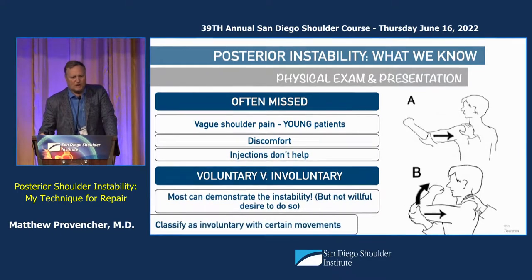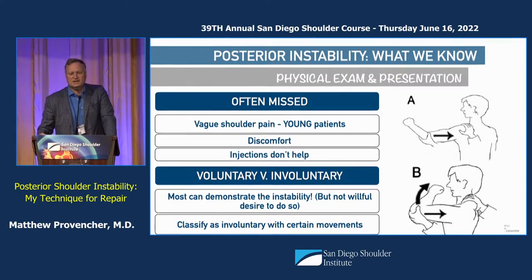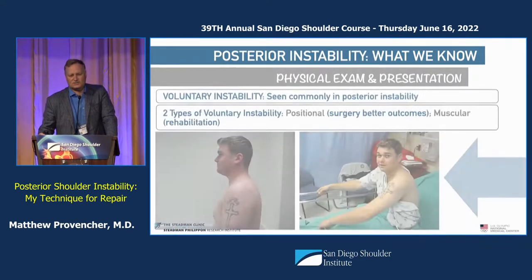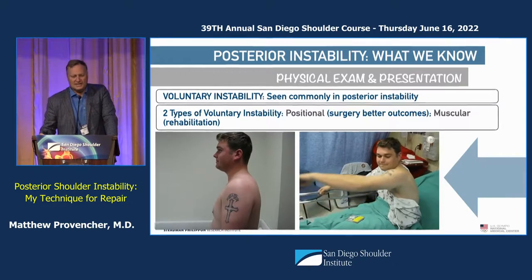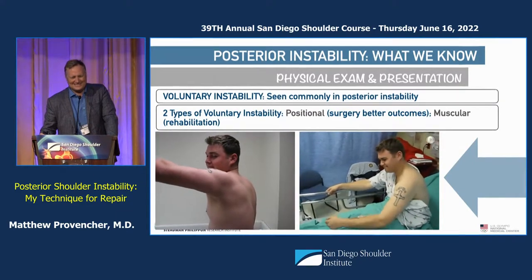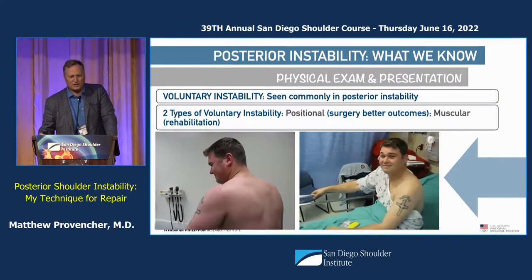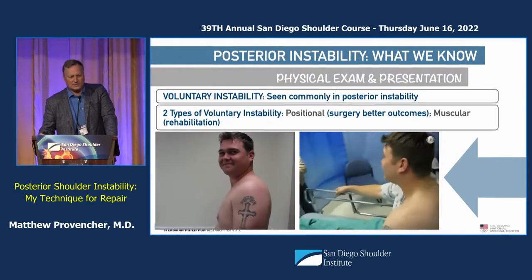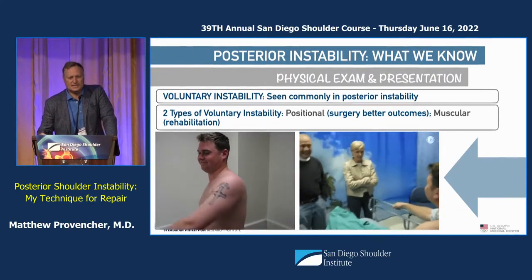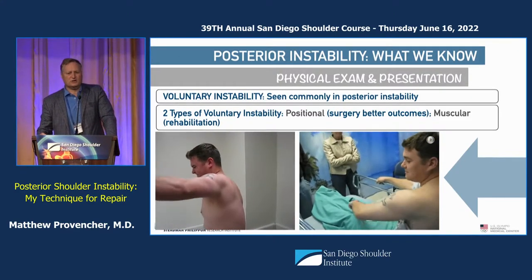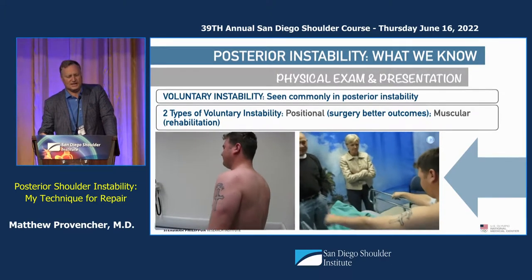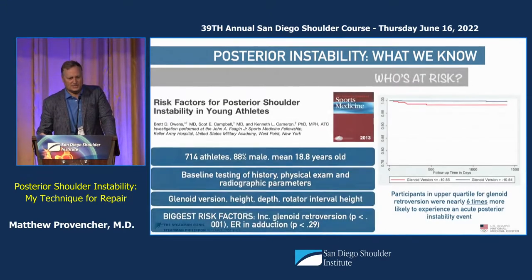Posterior instability can often be missed — it presents as vague shoulder pain. You have a 23-year-old who can't do as many push-ups or bench press. Subacromial space injections classically don't help. Voluntary versus involuntary instability matters — someone who doesn't like having it and shrugs it off represents a very common type of positional instability where surgery has much better outcomes, whereas the classic voluntary type is not as good.